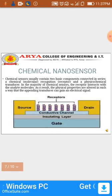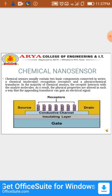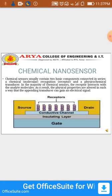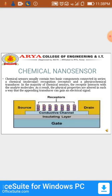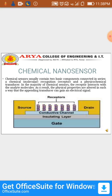Chemical nanosensors usually contain two basic components connected in series: a chemical receptor, such as a molecular layer. In a majority of chemical nanosensors, the receptor interacts with the analyte molecules. As a result, the physical properties of the chemical nanosensor are altered in such a way that the appended transducer can generate an electrical signal.